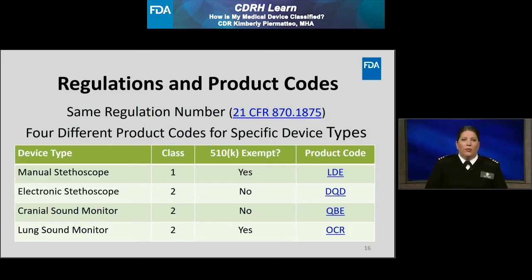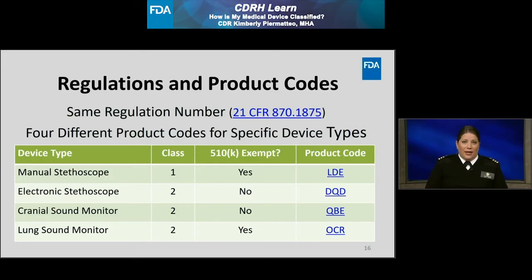For example, regulation number 21 CFR 870.1875 has four different product codes under this one regulation number. A manual stethoscope is considered Class 1 and 510(k) exempt under product code LDE, whereas an electronic stethoscope, which falls under the same regulation number, has a different product code, is considered Class 2, and is not 510(k) exempt. The key point is that when classifying a medical device, it is very important to drill down to the appropriate FDA product code and not just to the class or regulation number.